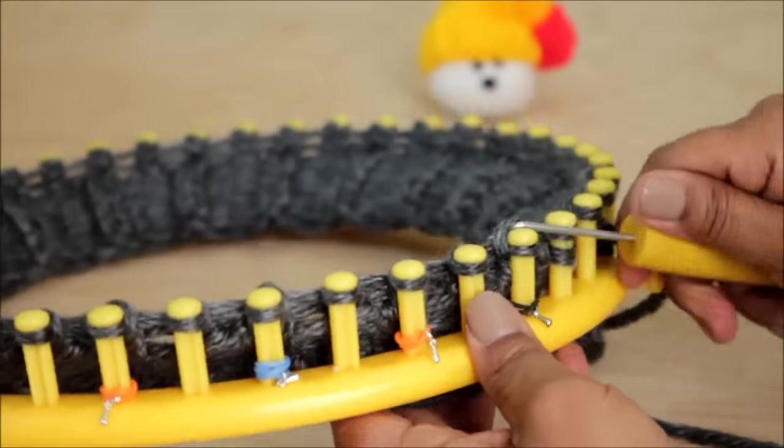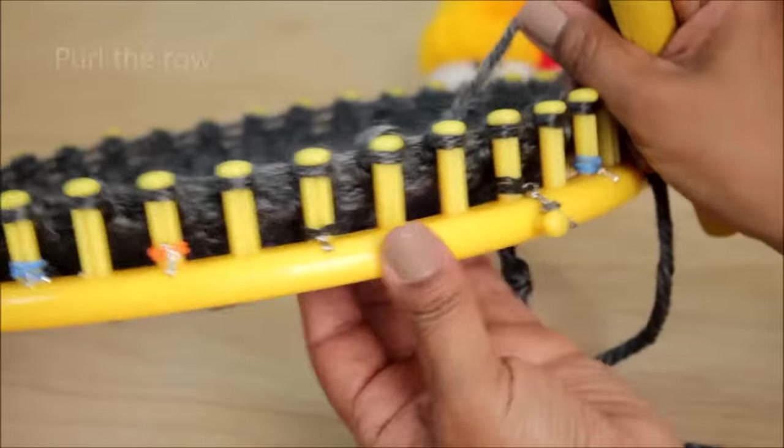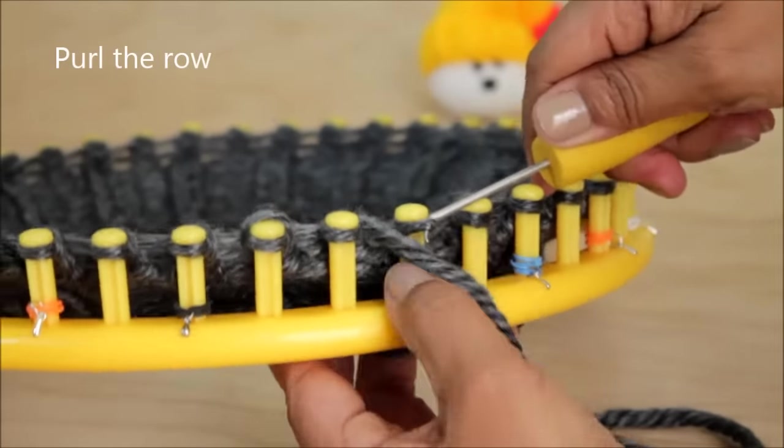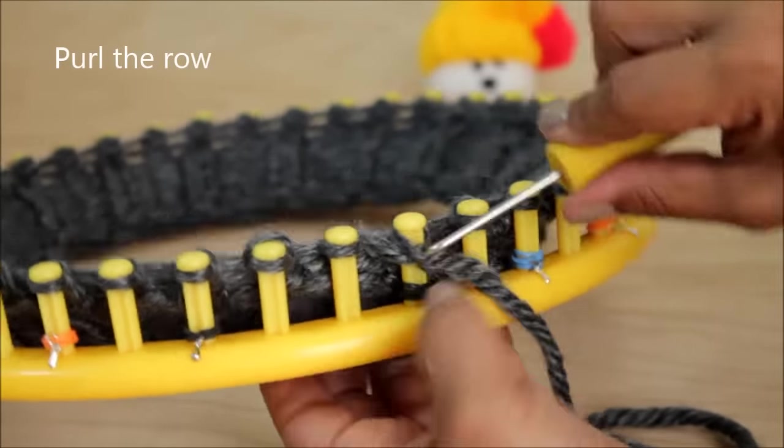When you're done with row 12 and you're ready for 13, it's simple enough. All you're going to do is purl the row. And you guys are purl stitch experts.